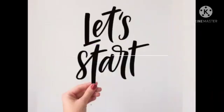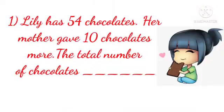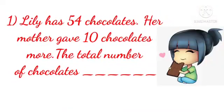So, let us start and solve the problems in your brain. Number 1: Lily has 54 chocolates. Her mother gave 10 chocolates more. Then the total number of chocolates will be?